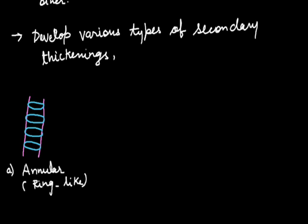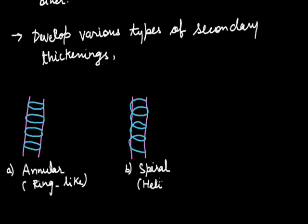Now the second category is of spiral thickening. It is also known as helical or helix-like thickening.